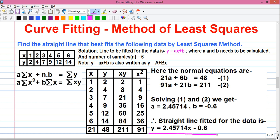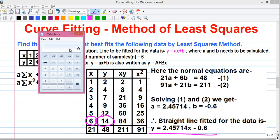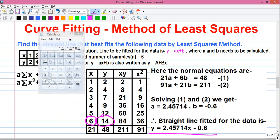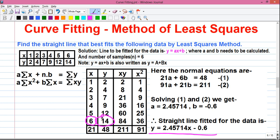You can easily verify the equation of the line. For that, take any value of x. Let's say for x = 6, we know the y value should be 14. Let's verify it. Our equation of the line is y = 2.45714 into x. So that is 2.45714 into 6 minus 0.6. That equals 14.14 or nearly equals to 14. So we can say our equation of the line is correct. Isn't it cool?